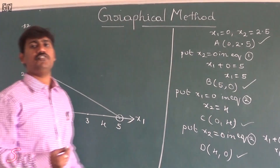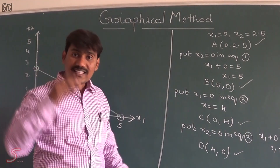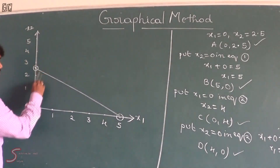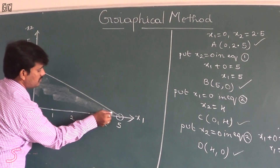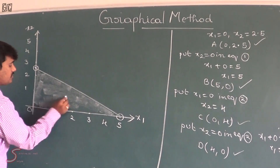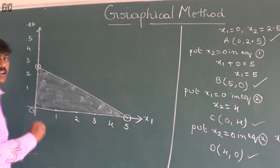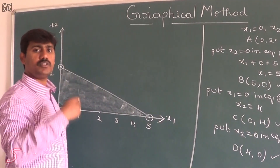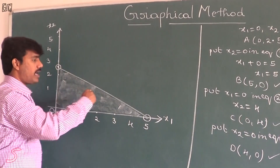If you observe the question, the first equation is in the form of less than or equal to type. Less than or equal to type means the feasible region is towards the origin (0, 0). If it were greater than or equal to type, it would be away from the origin. So this is all about the first equation line.